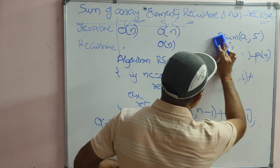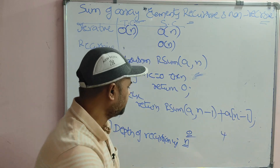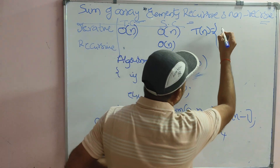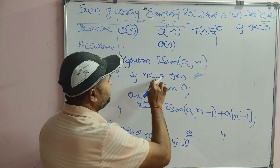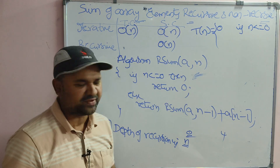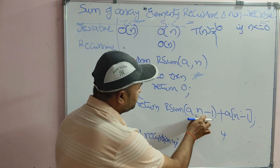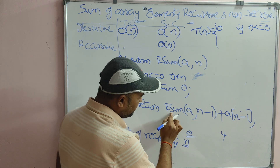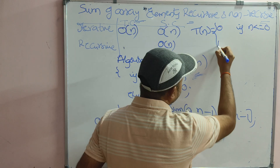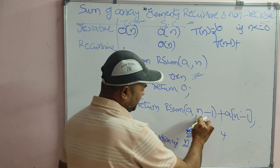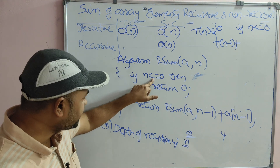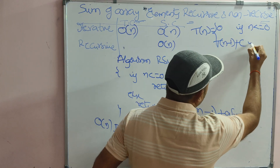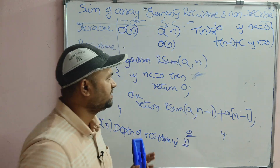Now let us analyze the time complexity. First, let us write the recurrence relation and then solve it. T(N) represents the time complexity for N elements. If N is less than or equal to 0, the result is 0, so T(0) equals 0. Otherwise, we call rsum(A, N minus 1), so the time complexity for that recursive call is T(N minus 1). We also need one comparison and one addition, which is a constant C. Therefore, T(N) equals T(N minus 1) plus C, for N greater than 0.